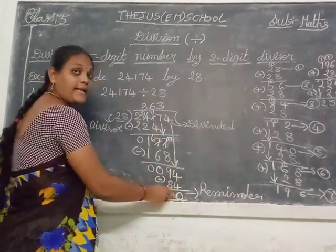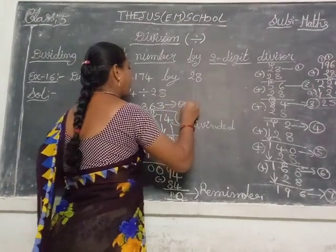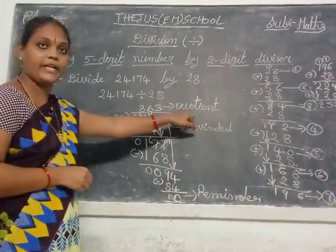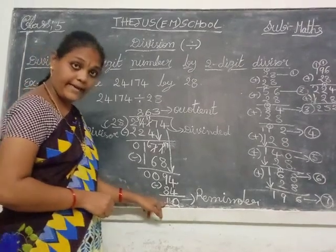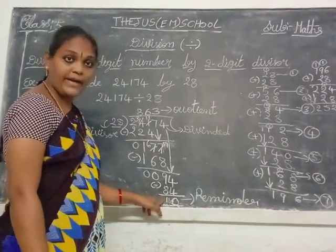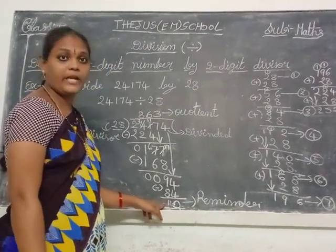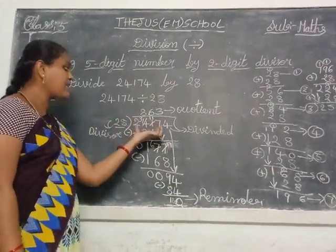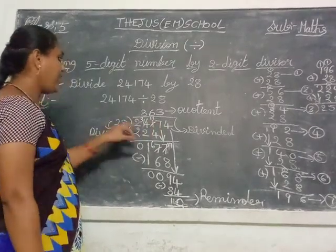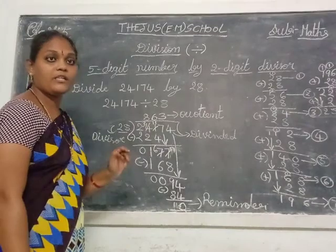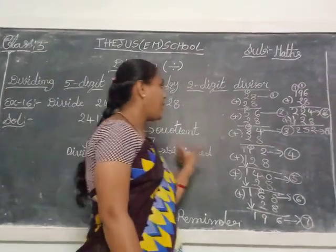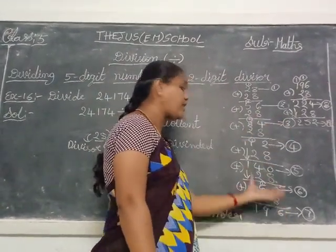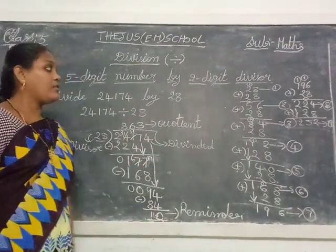This is called the remainder, children. And this is called the quotient. The answer is called the quotient. And this one is called the remainder — meaning the remaining numbers. So: divisor, dividend, remainder, quotient. Note this sum in your notebooks, children. You don't need to do the multiplication easily — just add it once again and it becomes the answer.